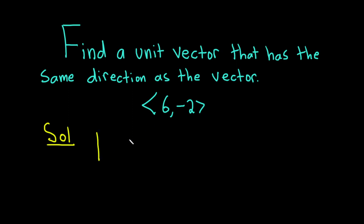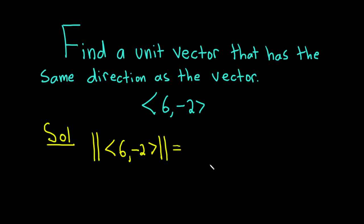Step one is to find the magnitude of this vector. We write the vector inside bars — you can use a single bar or a double bar, different books do it different ways. The formula is the square root of the sum of the squared components: 6 squared plus negative 2 squared.